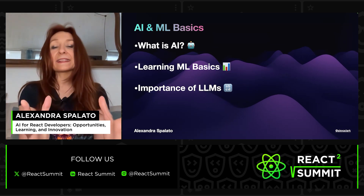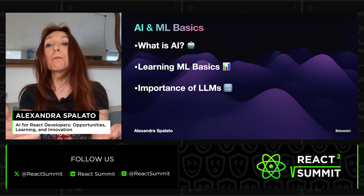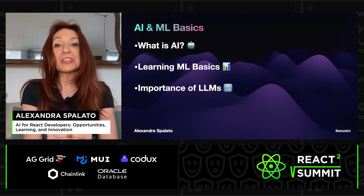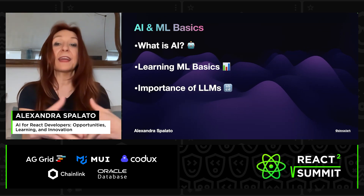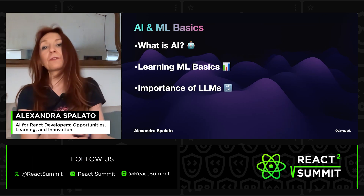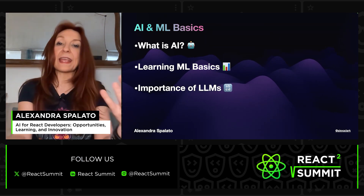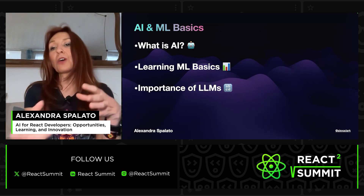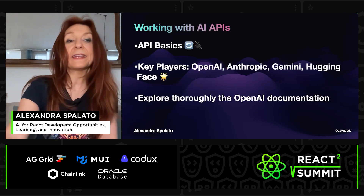Let's get the buzzwords down. AI is a big umbrella for all the technologies that make machines act like they have a brain. Machine learning is a part of AI where computers learn from data. Large language models such as GPT are special tools under machine learning, focused on understanding and creating text. Understanding these basics helps us see what AI can do and gives us a starting point for diving deeper into the world of AI engineering.